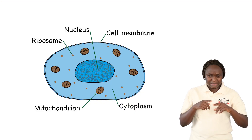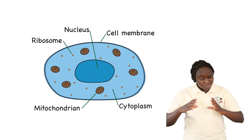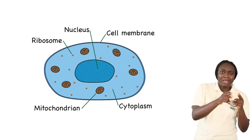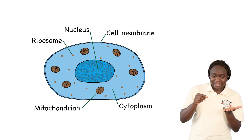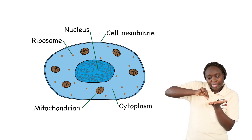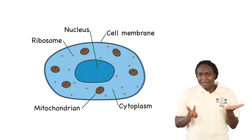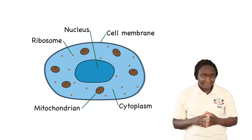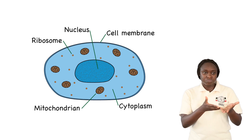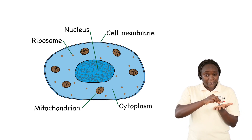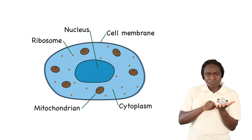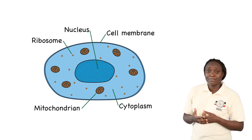Now we are also going to look at an actual animal cell as it is seen under a microscope. Do you see that image there? Do you notice the number of layers for the animal cell? Is it similar to what you saw in the egg cell? The animal cell also has three layers: an outer layer, then a layer after that outer layer, and then an inner layer.